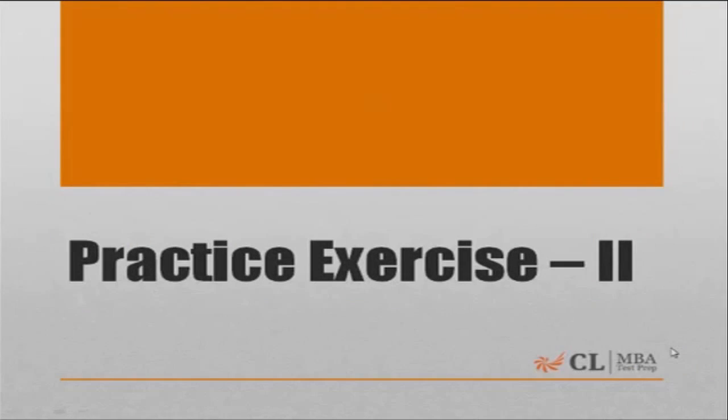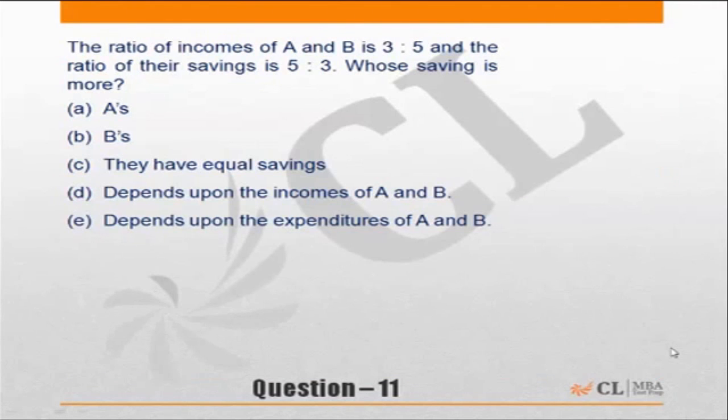Okay, let's do practice exercise 2, question number 11. Very simple question, but somehow people tend to get this question wrong, so I thought let me pick this question up also. The ratio of incomes of A and B is 3 is to 5.